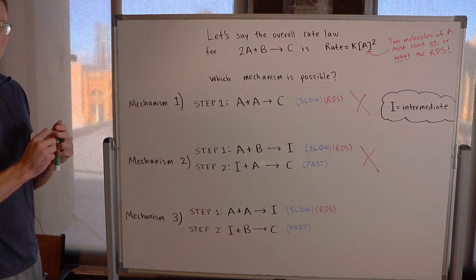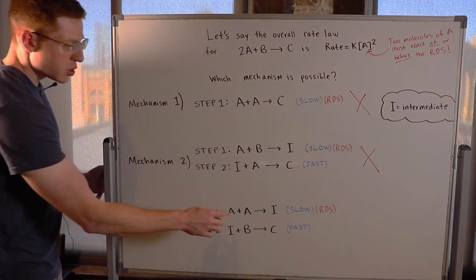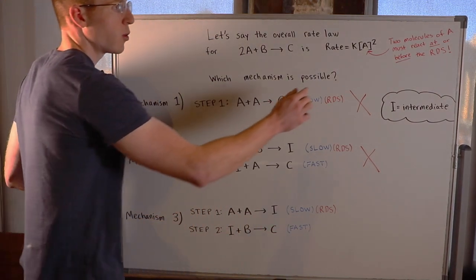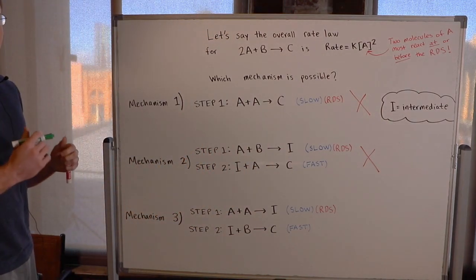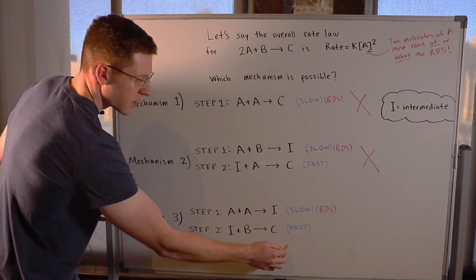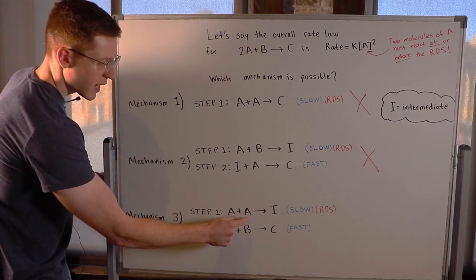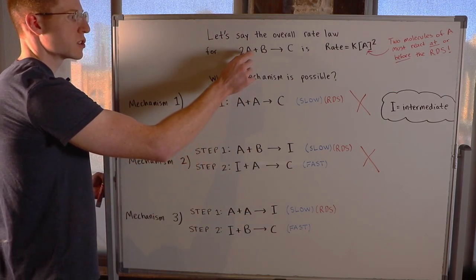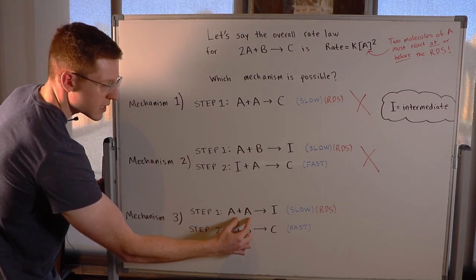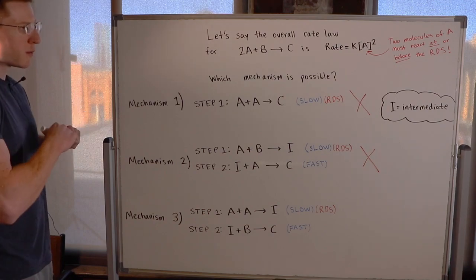So mechanism three must be the right one — but let's check it to make sure. Mechanism three is also a two-step mechanism in which two molecules of A react to make an intermediate in the slow or rate determining step. This satisfies the requirement that two molecules of A must have reacted at or before the rate determining step. Then the intermediate reacts with B to make our product in the fast final step. We see two A's and a B making C — that's what happened in our reaction, 2A + B → C. In the slow or rate determining step we saw two A's reacting, so this satisfies all of our requirements. Mechanism three is a possible mechanism for the above situation.